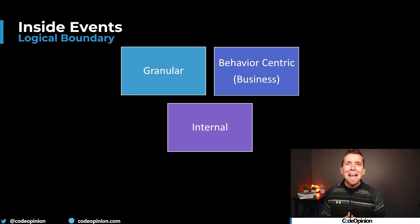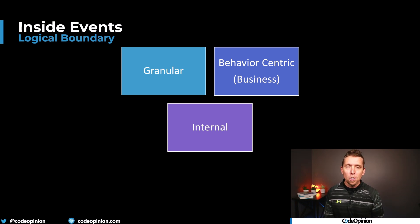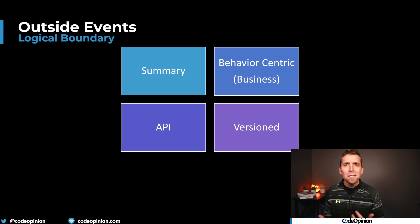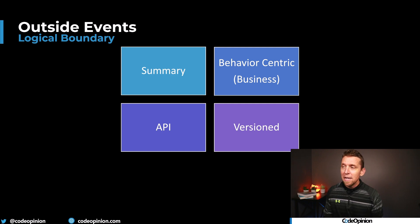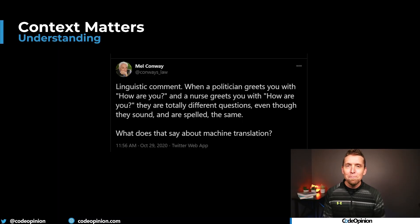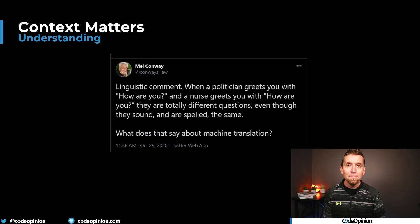Inside events are business concepts — they're behavior centric, but they're likely going to be a little bit more granular. That means you're capturing the exact intent of what somebody actually did. They're internal to your logical boundary. Outside events are still behavior centric, still business concepts that the business cares about, but they're your API — they're for your public consumer. So you're going to version those and deal with those differently. They can also be used more in summary, so they're less granular. I quote this from Mel Conway every chance I get because context matters: when a politician greets you with 'how are you' and a nurse greets you with 'how are you,' they're totally different questions, even though they sound and are spelled the same. What you care about inside your logical boundary is very different from what external outside consumers care about.